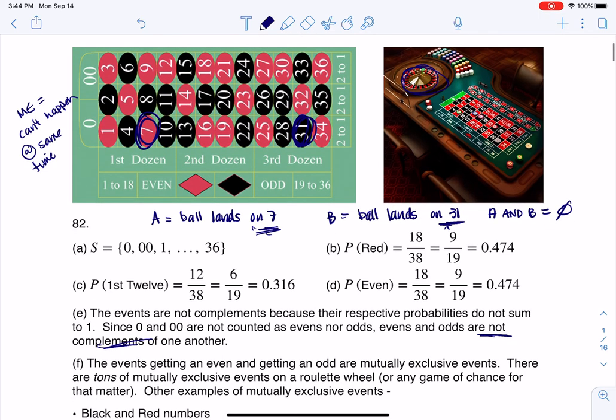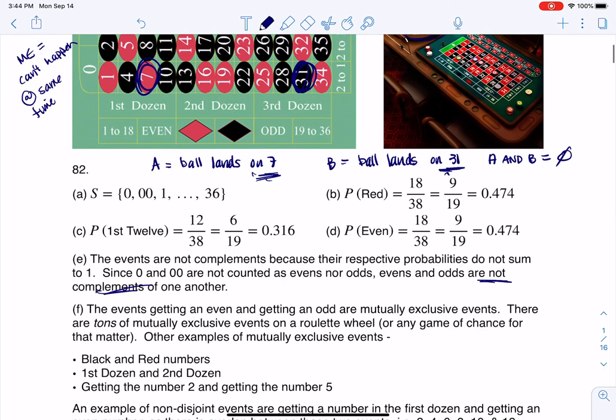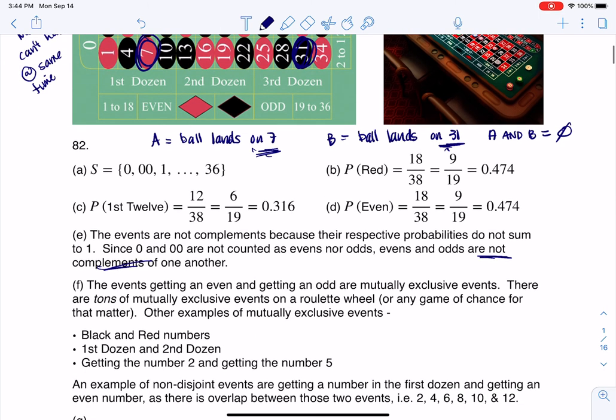And there's tons of them, right? So I actually wrote quite a few out here, right? I said, hey, black and red, right? You can't get a black and a red number at the same time. And again, I'm using the phrase and, right? The overlap, right? Do things overlap? Well, getting the first dozen and the second dozen at the same time, that can't happen. Getting the number two and the number five at the same time, it can't happen. And then you might even be thinking, well, what are examples now of not mutually exclusive events?